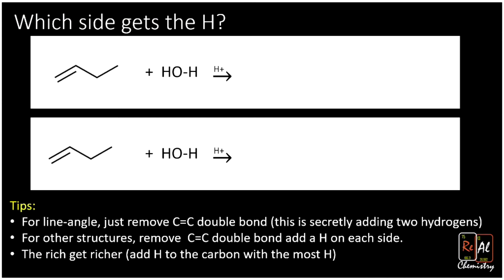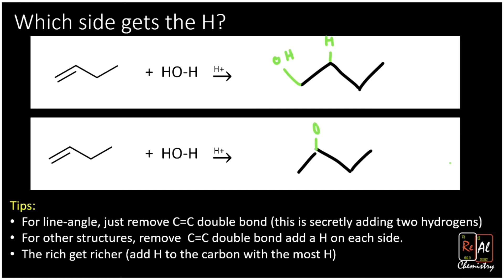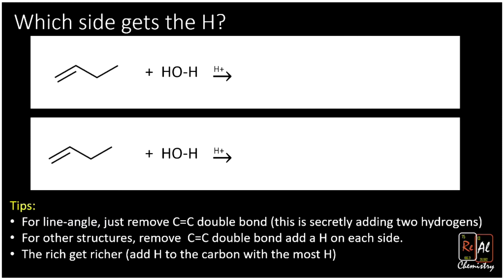Instead of 2-butene we now have 1-butene that we're adding water to, and we have a line angle structure. We could add the OH on the left side, or we could add the OH on the second carbon and the H on the first carbon — both are possible. So which one happens? That's where a rule called Markovnikov's rule comes in.